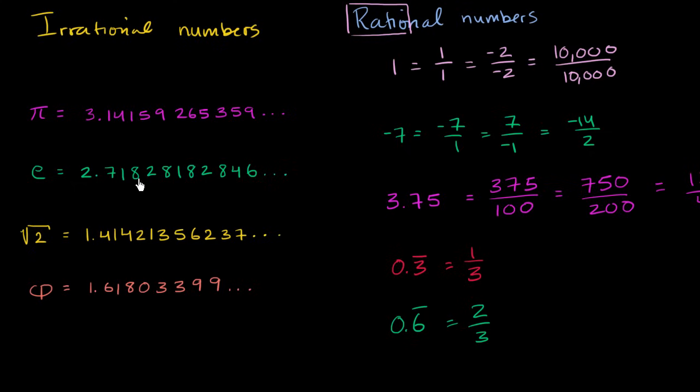E, same thing. Never terminates. Never repeats. It comes out of continuously compounding interest. It comes out of complex analysis. E shows up all over the place. Square root of 2. Irrational number. Phi, the golden ratio. Irrational number. So these things that really just pop out of nature. Many of these numbers are irrational.